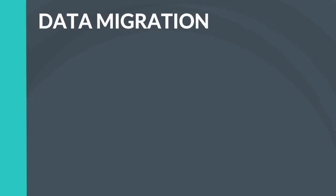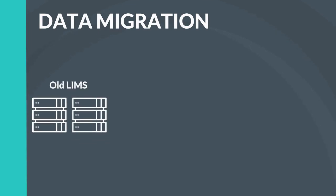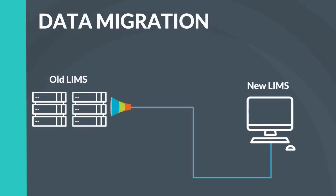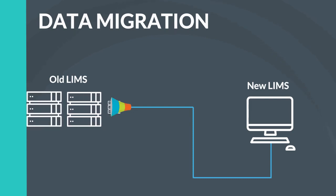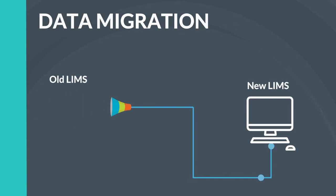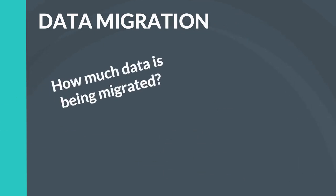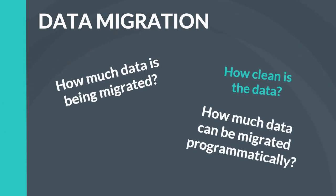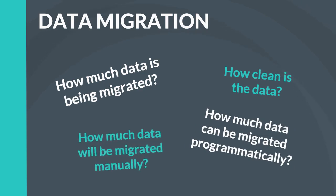Data migration. Often overlooked when compiling the total cost of a LIMS project is the cost associated with migrating your legacy data to the new LIMS. The old data to be migrated can include both static data and dynamic data. The cost of data migration will be dependent on a number of factors: How much data is to be migrated? How clean is the data? How much data can be migrated programmatically? And how much data will have to be migrated manually?